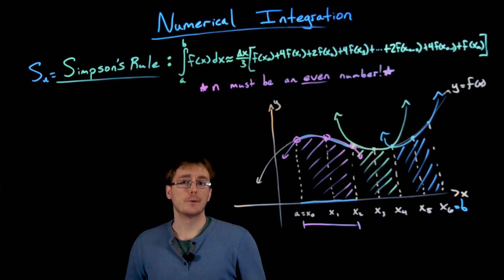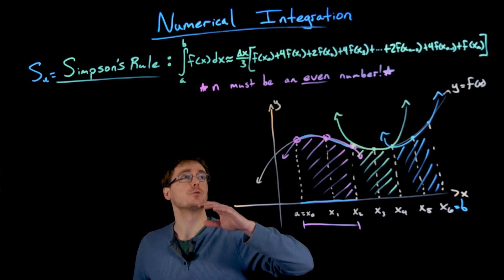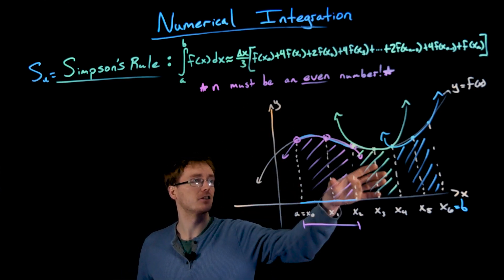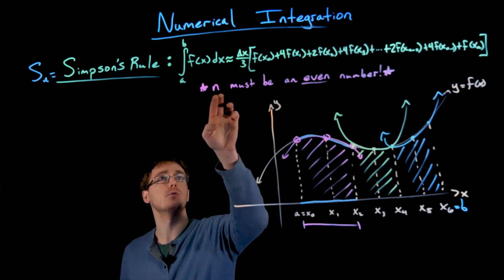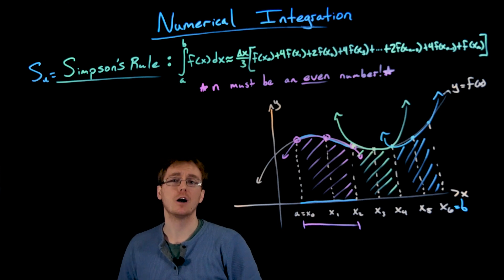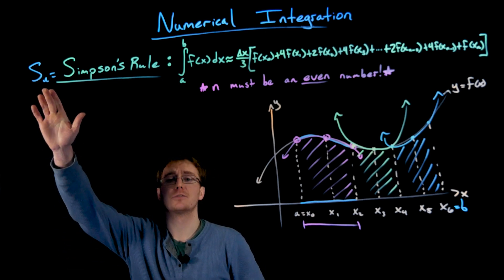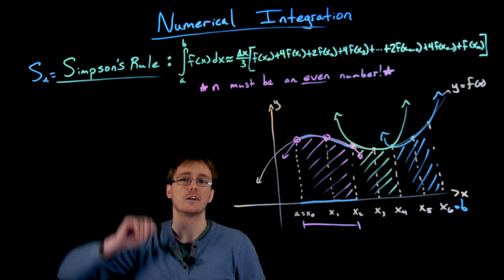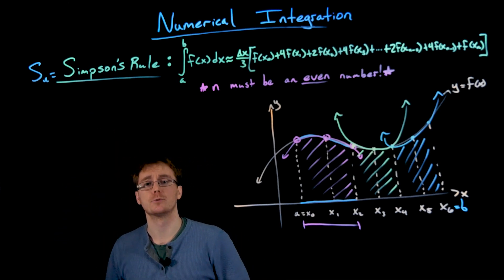I think we're about ready to look at an example using Simpson's rule. The thing to remember, besides the formula itself — and this is what this small derivation was about — is that we can only apply Simpson's rule when we're working with an even number of subintervals. We can't use S sub 7 or S sub 5; our subscript has to be an even number. Otherwise, Simpson's rule doesn't apply.